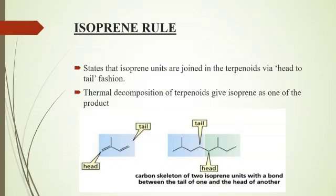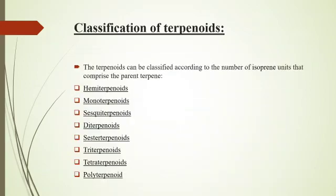The isoprene rule states that isoprene units are joined in terpenoids via a head-to-tail fashion. However, this rule can only be used as a guiding principle, not as a fixed rule. For example, carotenoids are joined tail to tail at their central point, not head to tail. Thermal decomposition of terpenoids gives isoprene as one of the products.